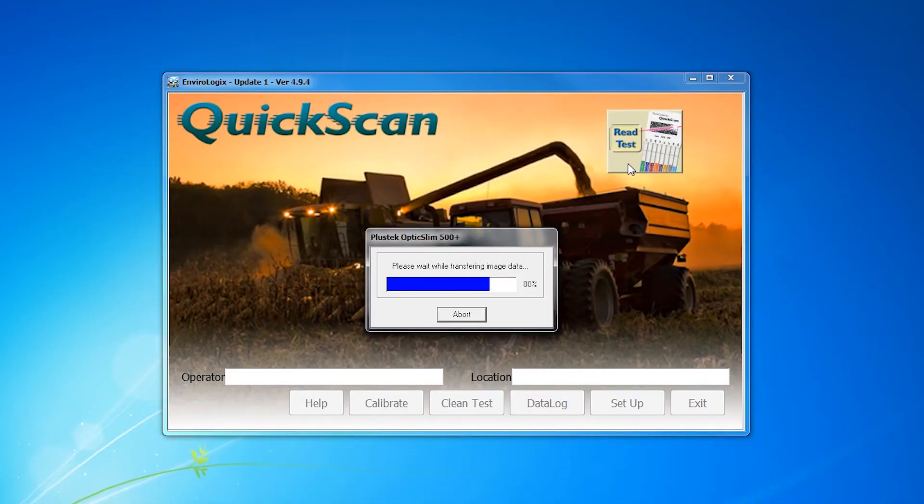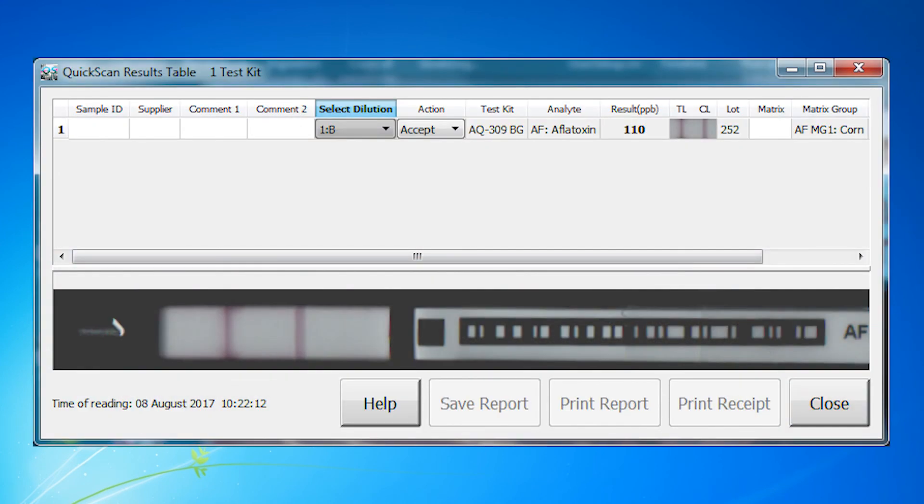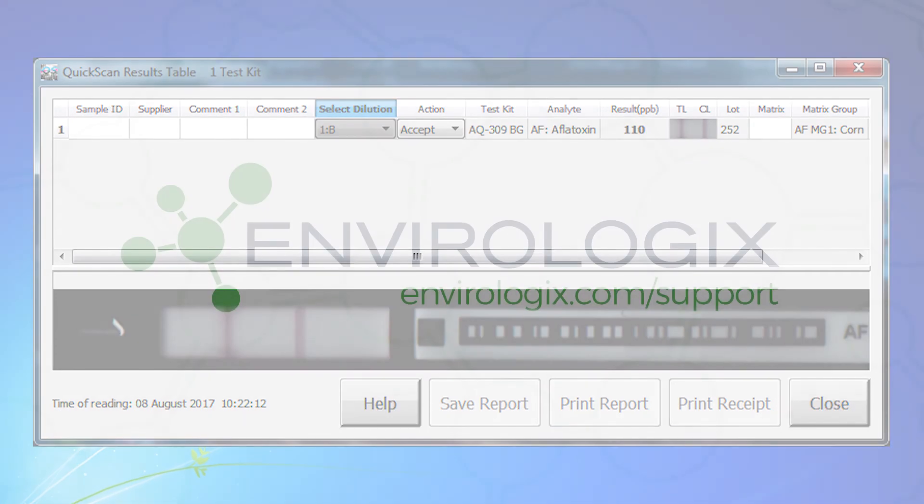Step 6. On the quick scan results screen, choose 1B under the dilution tab drop down menu. The system will calculate and record the aflatoxin level in the diluted sample. Adjusted results are valid in the range of 100 to 300 parts per billion.